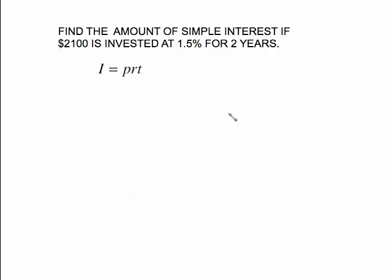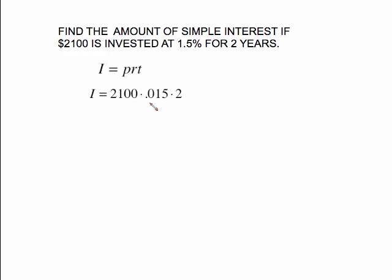Find the amount of simple interest if twenty-one hundred dollars is invested at 1.5 percent for two years. Here's your P, your R, and your T. Remember the decimal point has to move two places to the left when you write it as a rate, so 1.5% becomes 0.015. That gives twenty-one hundred times 0.015 times two — you need to add a zero in that space. Type it in and you get sixty-three dollars of interest earned.